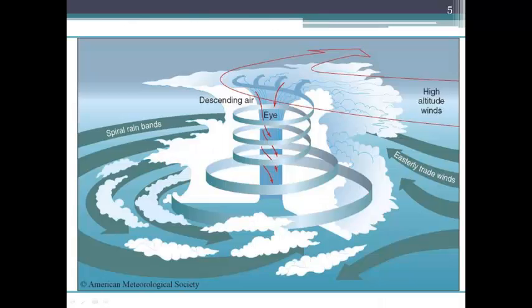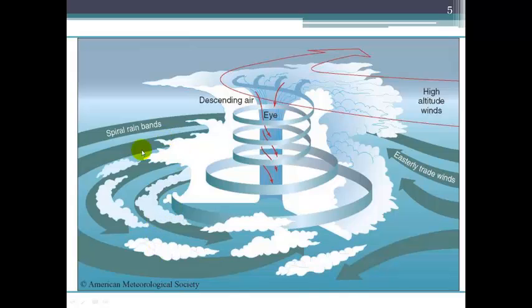Looking at a schematic, we see the eye of the storm in the center, surrounded by the eye wall made up of large cumulonimbus clouds. This is a low pressure system, so the rotation is counterclockwise and inward. We can see the spiral rain bands that spiral out from the storm, but the general circulation is counterclockwise, with higher-altitude winds driving the direction of the system.